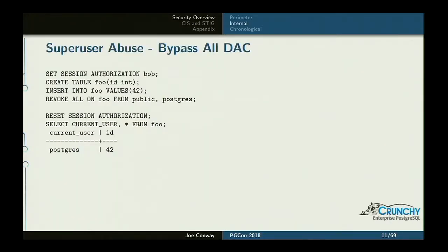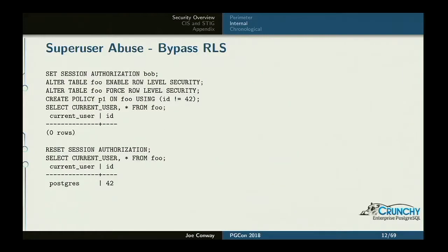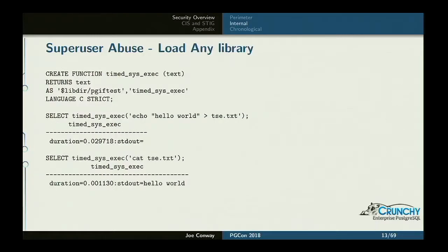Here's an example of bypassing all DAC: I revoke all on a table from Postgres, yet when I'm logged in as Postgres I can still see the row — not surprising. More surprising: with RLS set up, when I'm logged in as an unprivileged user it works and I don't see the row, but when I log in as the superuser I still see the row because RLS does not apply to the superuser. Here's another interesting one — system_exec is an extension I wrote for benchmark testing that lets you execute anything at the shell. I'm using it to echo text into a file on disk and cat it, and as the superuser I can install this function and start reading and writing from the file system.